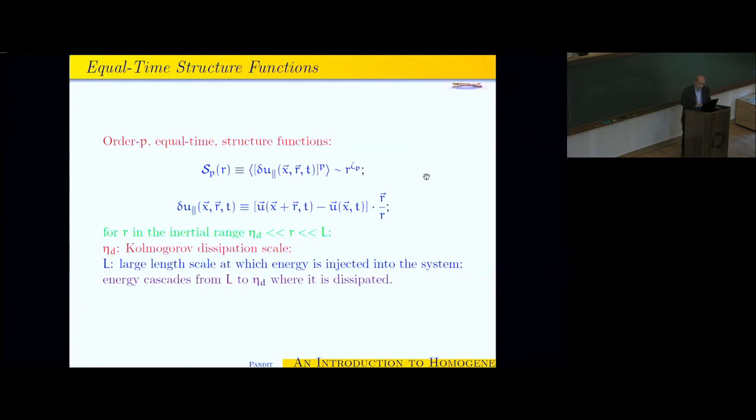Since you don't want to deal with vectors, let us say you take its longitudinal component by dotting it with r over r. You call that delta u parallel. Then you take this delta u parallel, the longitudinal increment, raise it to the power p. Those angular brackets mean an average over the statistically steady state of forced turbulence. And you find that it goes as r to a power zeta sub p. So this power depends on the order p. And all this, again, for lengths r that are in the inertial range that I just defined.